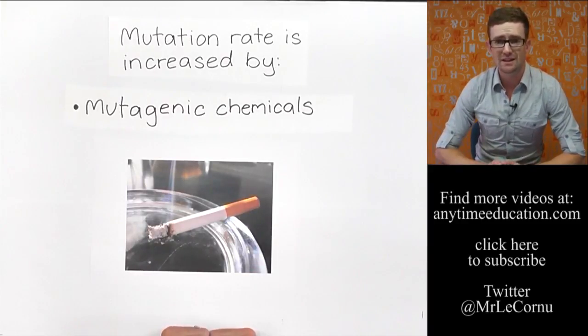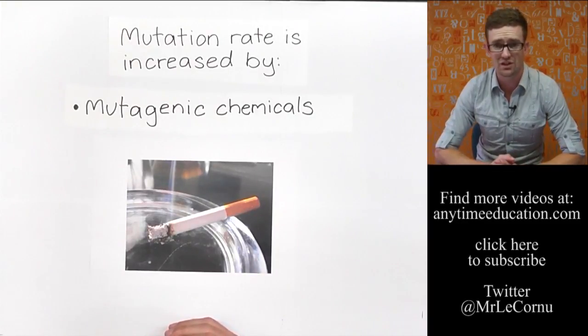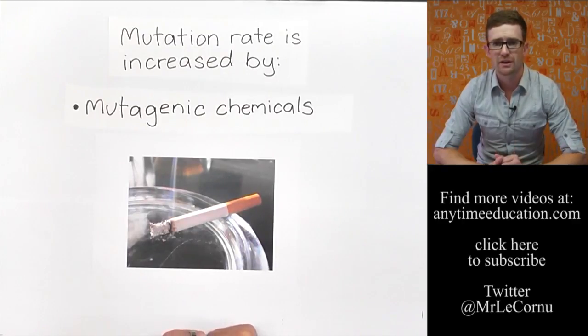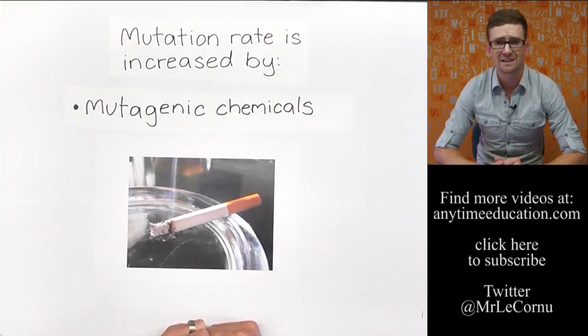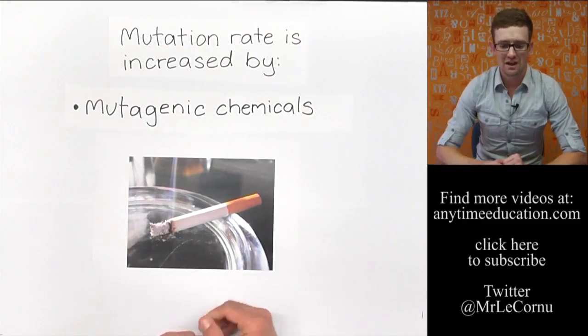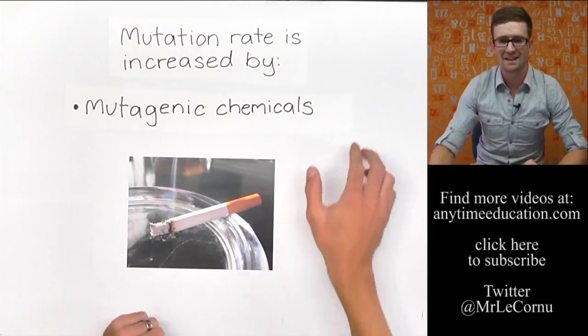Cigarette smoke is capable of increasing and does increase the rate of mutations in DNA, which makes it very dangerous. In fact, the mutations caused by cigarette smoke can cause cells to become cancerous. And chemicals that can cause cells to become cancerous are called carcinogens, or carcinogenic chemicals. So mutagenic chemicals are capable of increasing mutation rate, and they are the second factor.